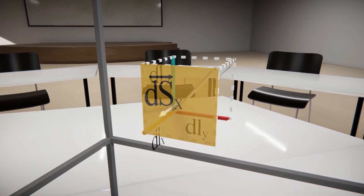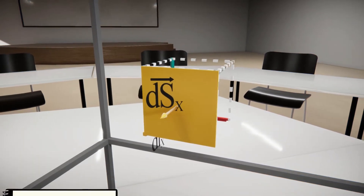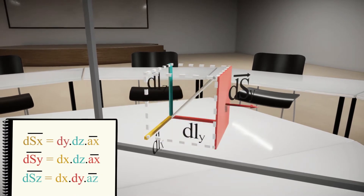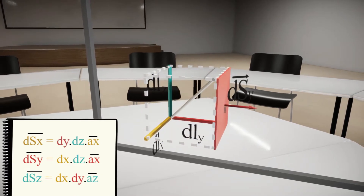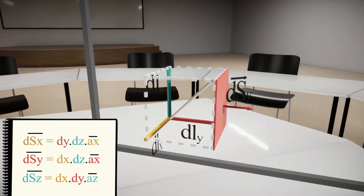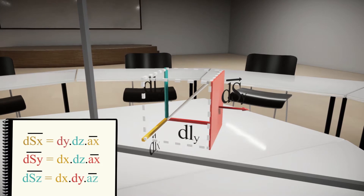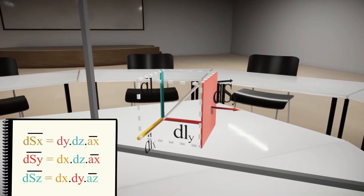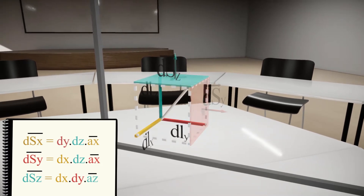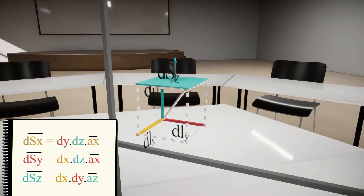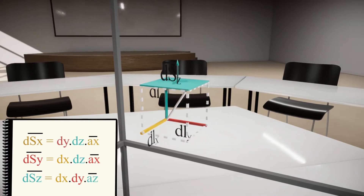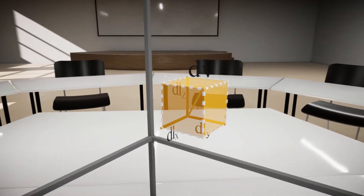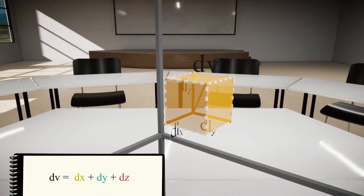Each pair of differential lengths generates differential surfaces, which are represented using vectors normal to said surfaces. If we multiply the magnitudes of the differential lengths dl_x, dl_y, and dl_z, we obtain the corresponding differential volume dv.